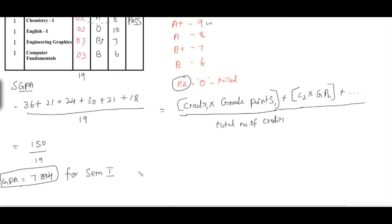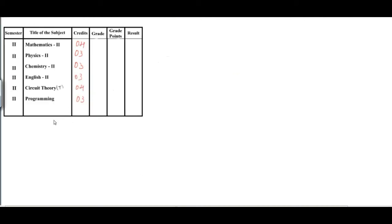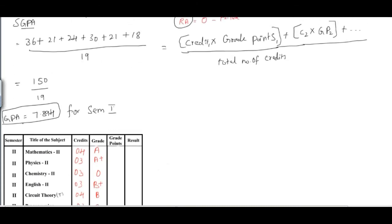Please note: 150 divided by 19 is very important to remember. This is the GPA for semester 1. Similarly, we have to calculate for the second semester. For semester 2, the same student has registered for 6 subjects with credits allotted, and after appearing for the end semester examinations, she got some grades assigned randomly — excluding RA.